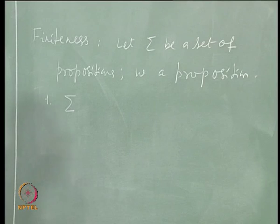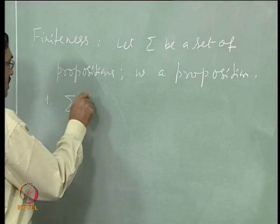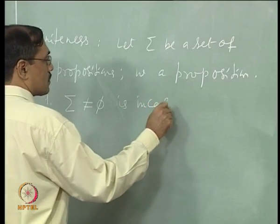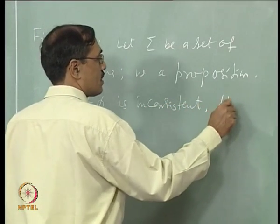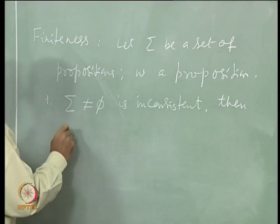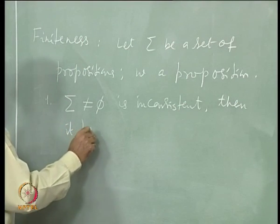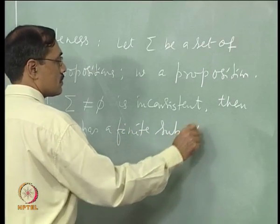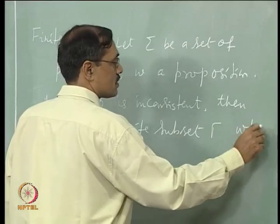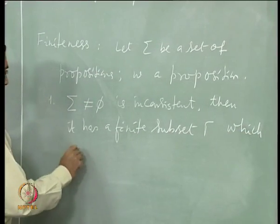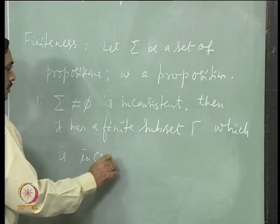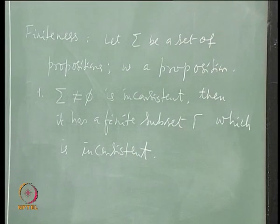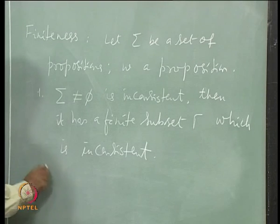It should be non-empty. Let us start with the non-empty set. Suppose Σ is a non-empty set which is inconsistent. Then it has a finite subset, say Γ, which is inconsistent. This is for consistency and inconsistency. Similarly, you can have the formulation for entailment.